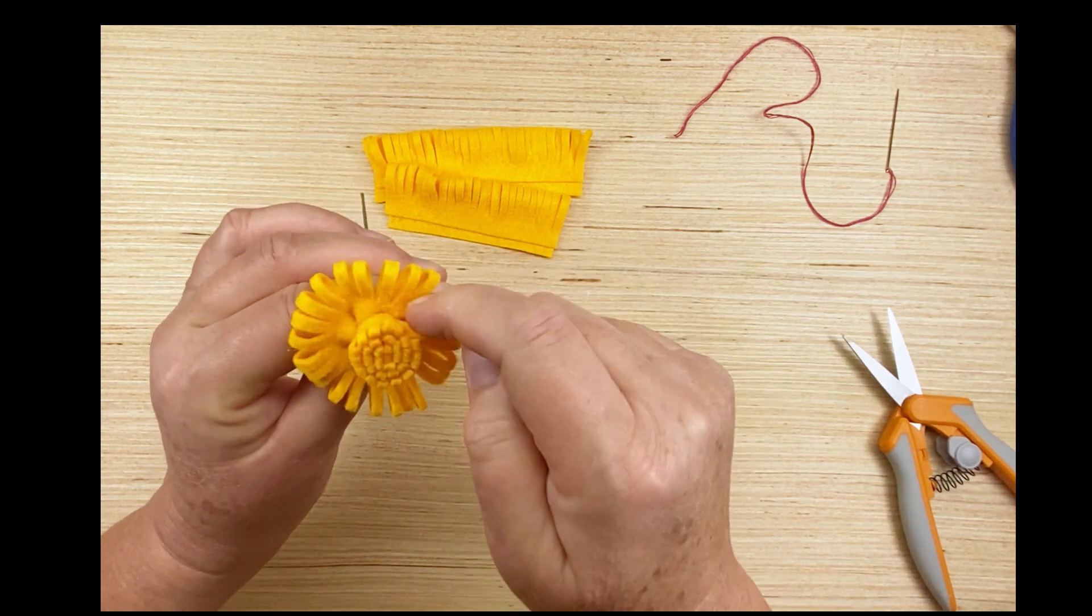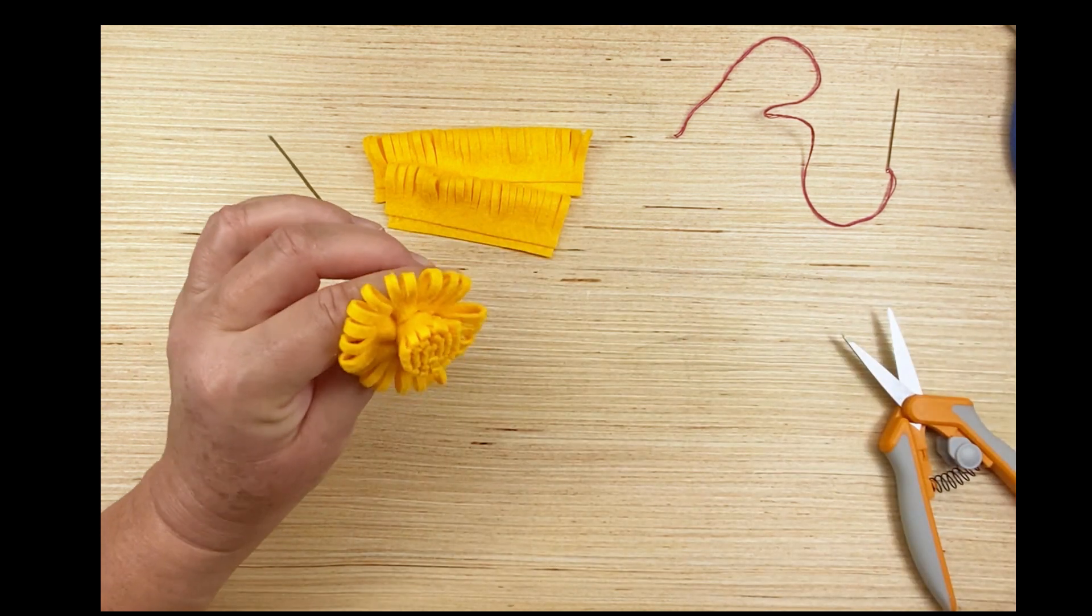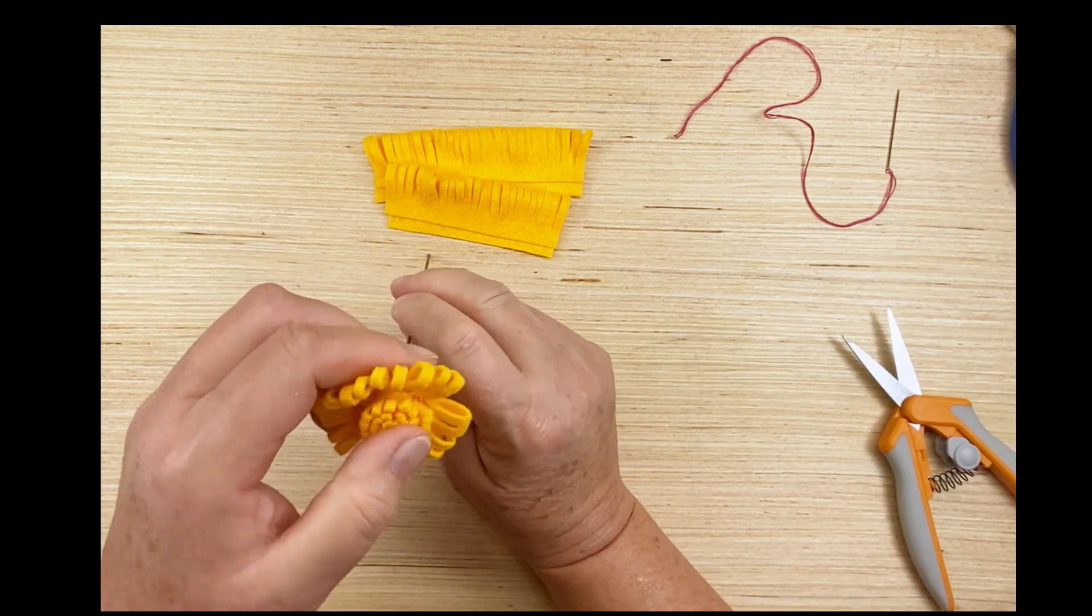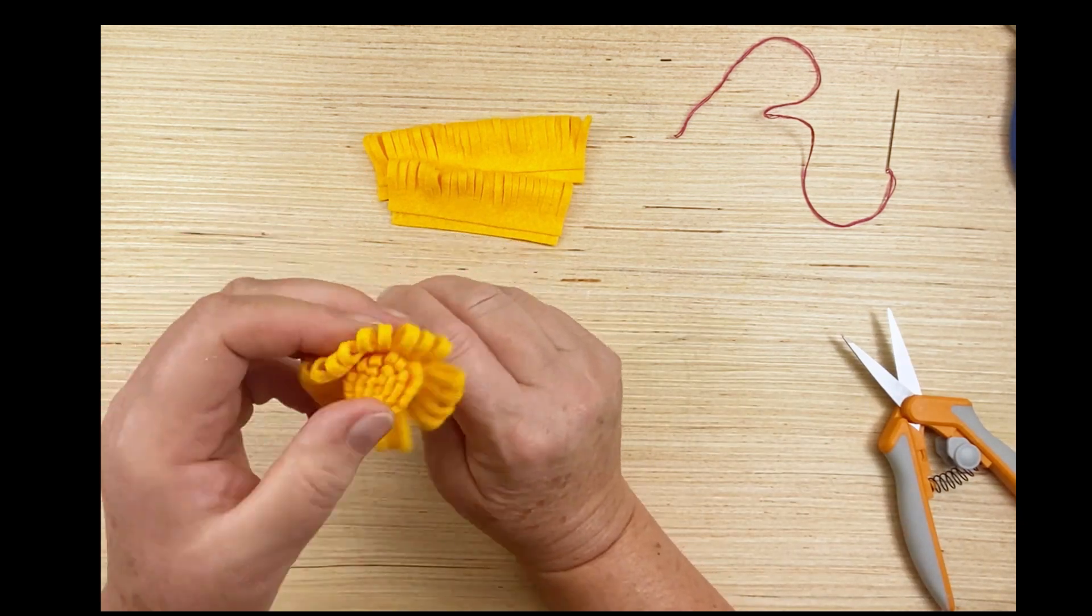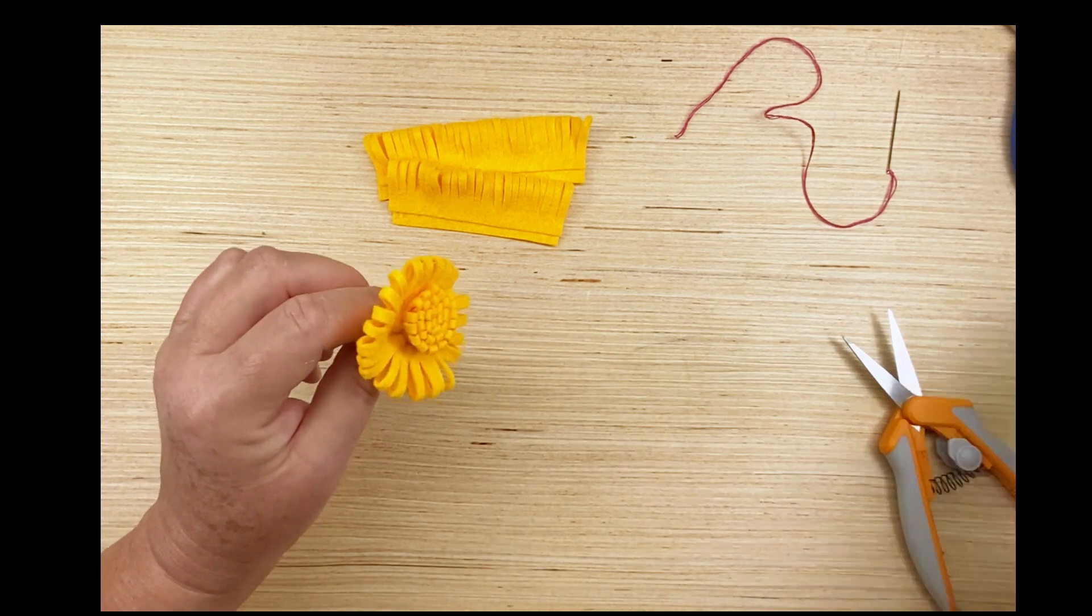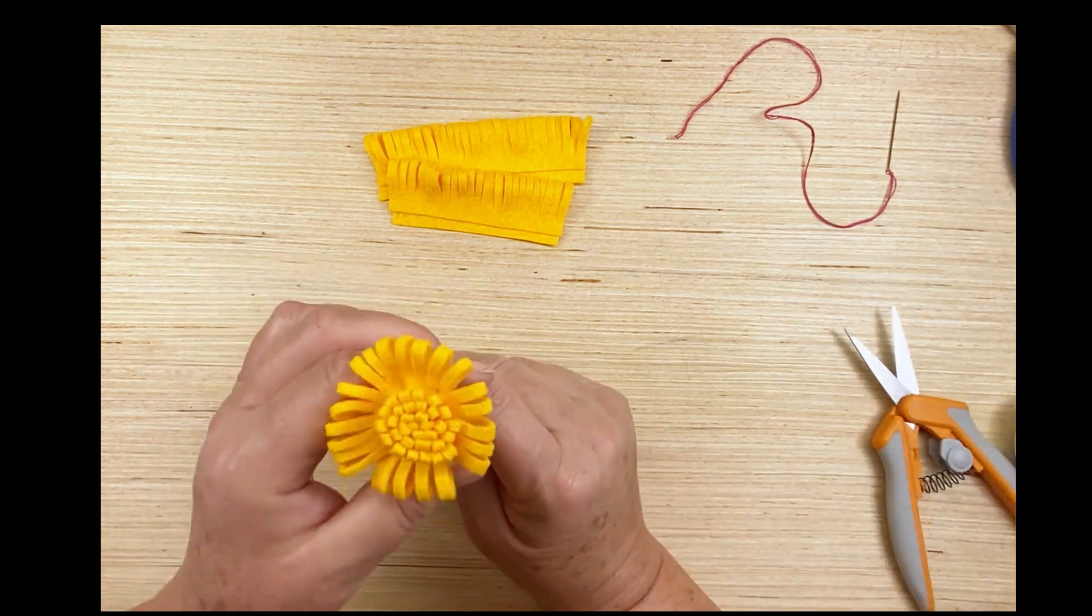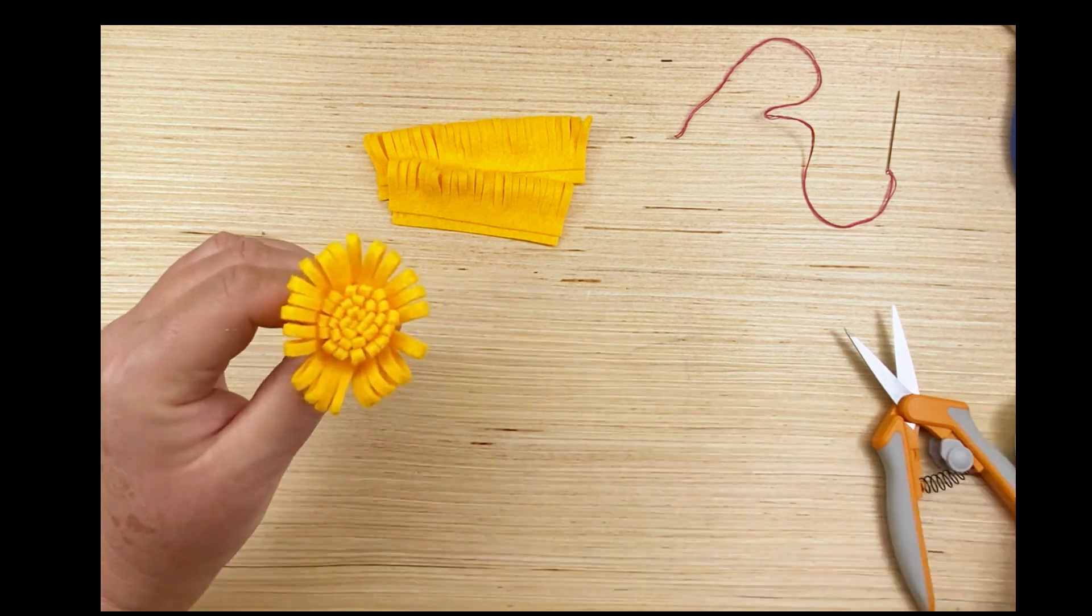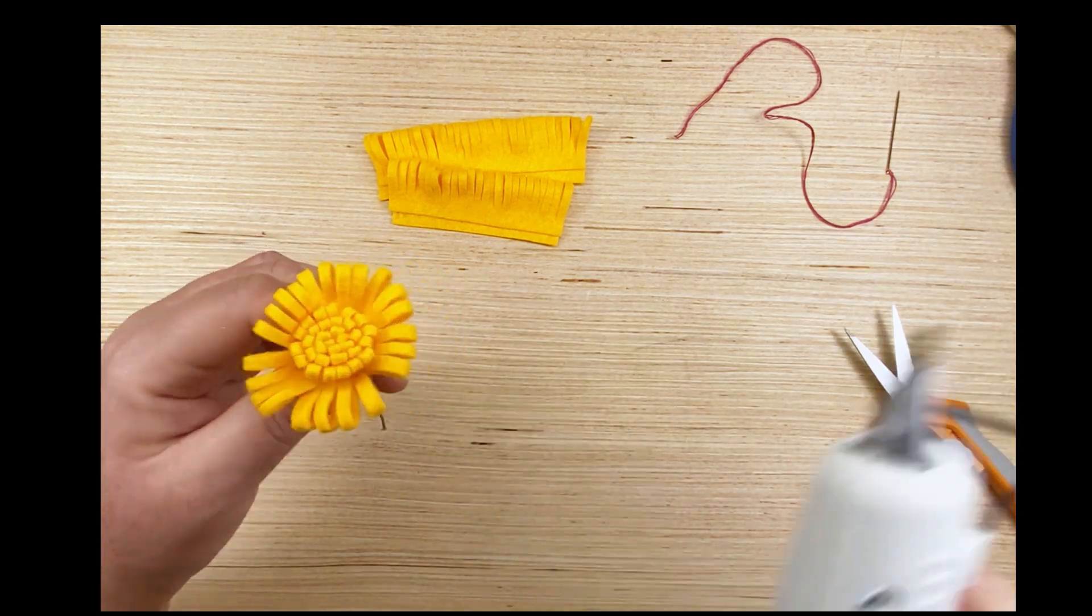And then we're going to glue around the edge of the center and pull the petals up so that they can rest the center a little bit better. Do it in stages because the glue does set up quite fast. And don't be scared to squeeze your flower, felt flowers are pretty hard, they aren't fragile like paper flowers, you can handle them quite roughly.